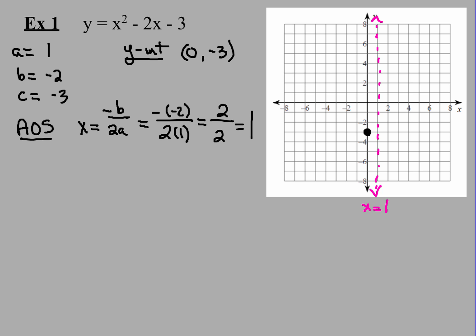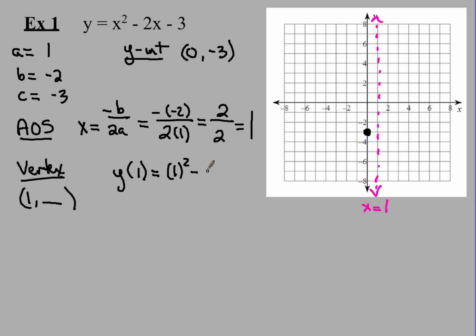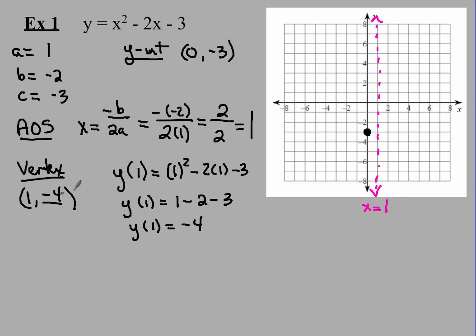What's really cool about that is I'm going to use that number to help me find my vertex. I know it's 1, some number — and now I have to find the y-value. I'm simply going to plug in 1 anywhere there's an x. So y of 1 equals 1 squared minus 2 times 1 minus 3. Careful here: 1 squared is 1, minus 2 times 1 is 2, minus 3. So 1 minus 2 minus 3 equals negative 4. My vertex is going to be the point 1, negative 4, right there on my AOS.